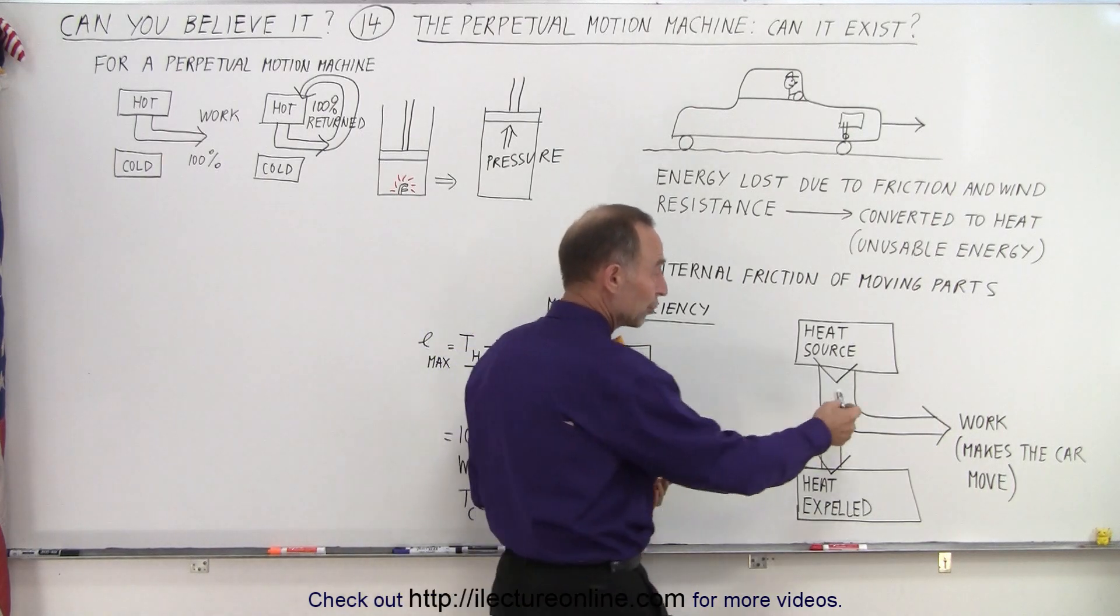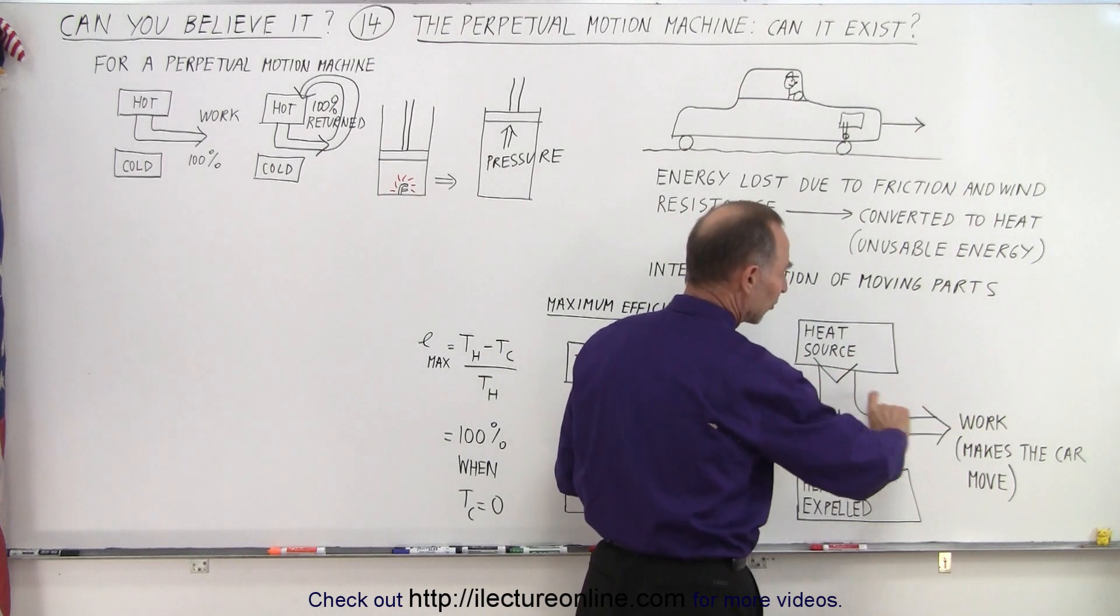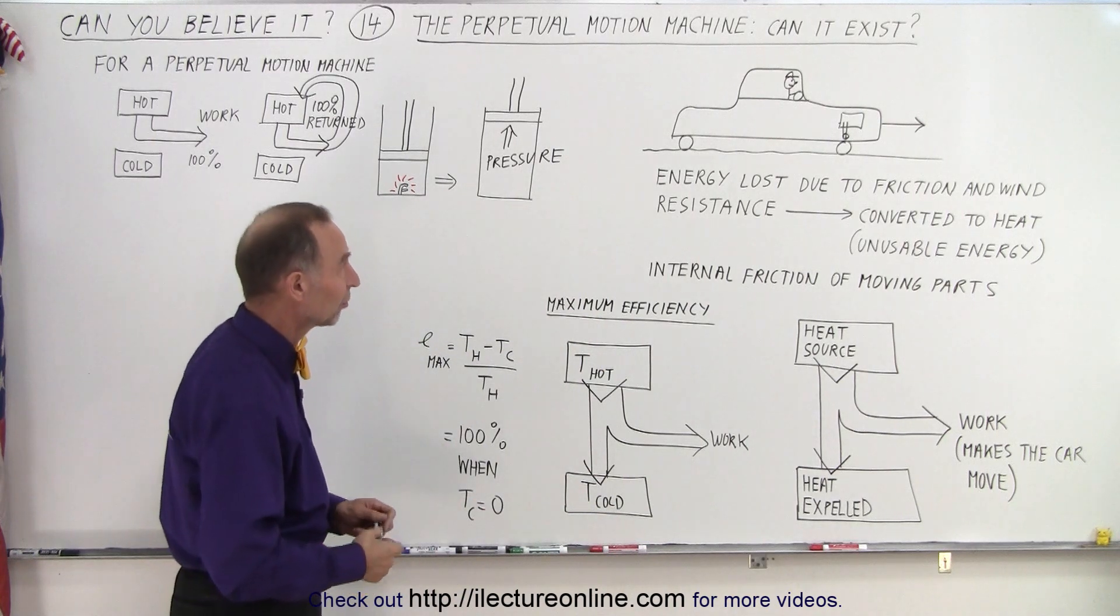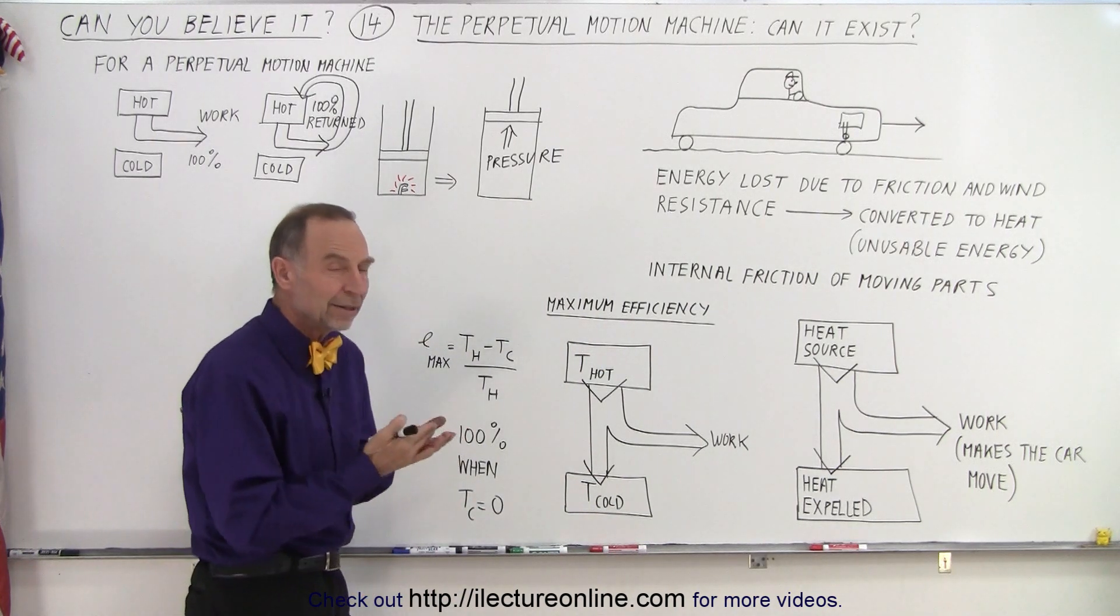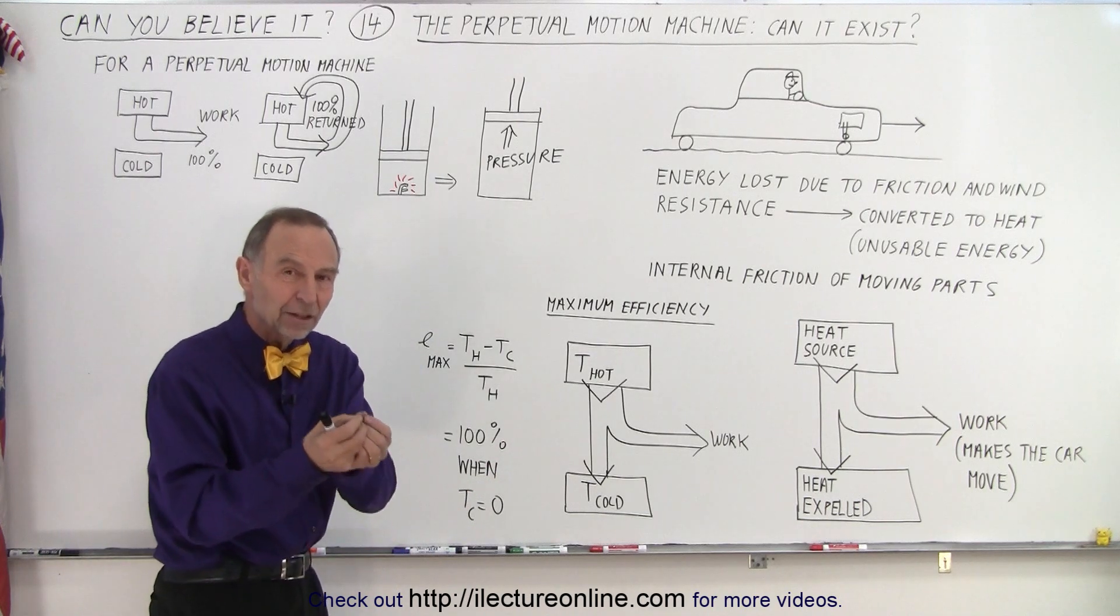So the idea is to improve the efficiency as much as possible, to get as much work out of that as possible and as little waste as possible. You want to reduce the friction, reduce the wind resistance, reduce the amount of heat loss. You want the heat coming out of the tailpipe to be as little as possible.